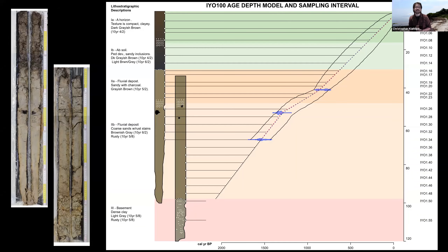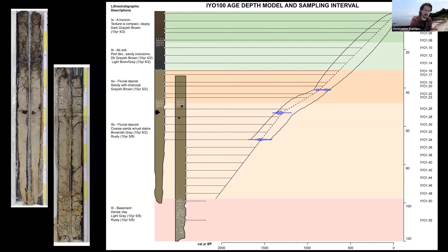Taking cores is always a gamble because you never necessarily know how old the deposits will be — in this case we got lucky. The large image shows how sediment depth relates to age, with radiocarbon dates marking the age-depth model. In the actual core images you can see massive chunks of charcoal. This being an area where iron smelting certainly occurred makes it a tantalizing record for looking at how people impacted this environment. The pollen counting is ongoing.